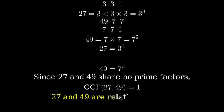This means that 1 is the largest number that divides evenly into both 27 and 49, making them relatively prime numbers.